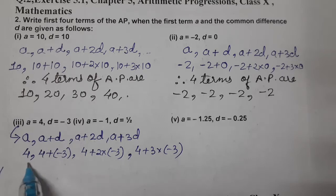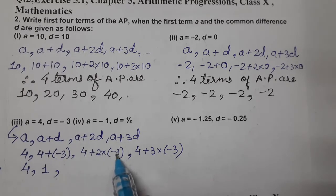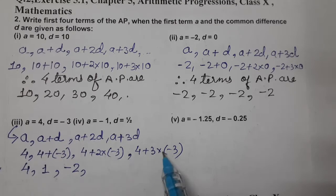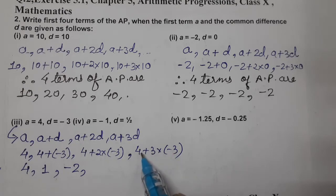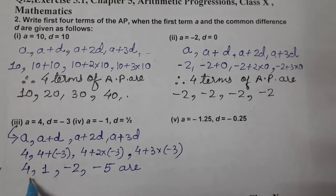So, what will we get? 4, 4 minus 3 hai, 1, 2, 3, 6, minus 6, 4 minus 6 hai, minus 2. And 3, 3, 9, minus 9, minus 9 plus 4, kitna ho gya? Minus 5. So, yeh aage, hamari 4 terms of AP are 4, 1, minus 2, minus 5.